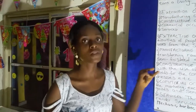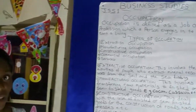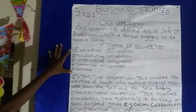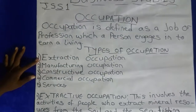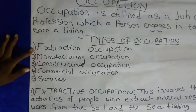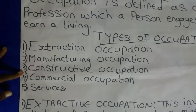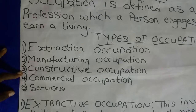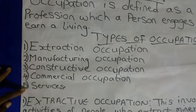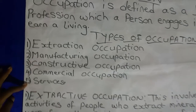Anything that brings food to your table or brings money to your pocket, it's called your occupation. Now we have different types of occupation — five actually. The first one is extractive occupation, manufacturing occupation, constructive occupation, commercial occupation, and services.